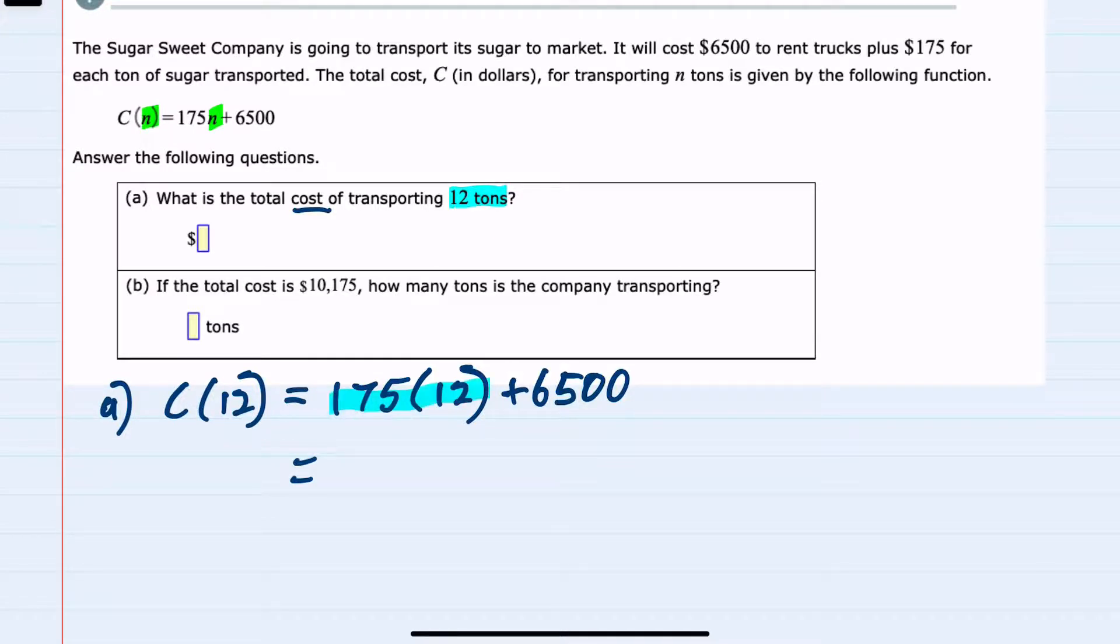And then we can simplify to find the cost for transporting those 12 tons, first doing multiplication because of order of operations. The multiplication gives us $2,100, and we still have to add the $6,500. So the total cost for 12 tons is $8,600.